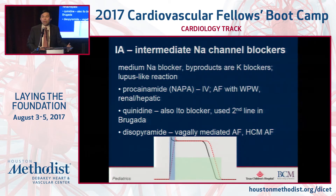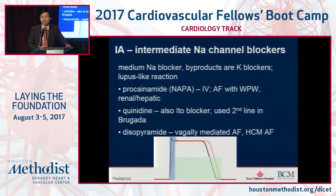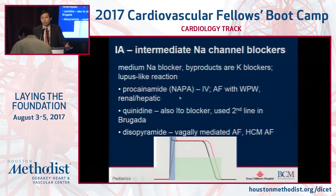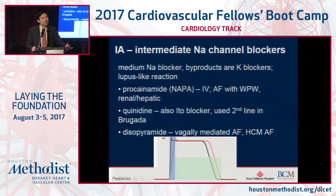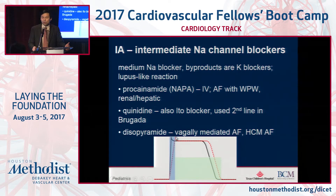The 1A agents — your medium or intermediate sodium channel blockers — the key thing to remember is that their byproducts are actually potassium channel blockers too, and on some boards they'll show up as a lupus-like reaction. Procainamide, quinidine, and disopyramide are listed here. Procainamide's buzzword is atrial fibrillation in Wolff-Parkinson-White, and it's renally and hepatically cleared as its metabolite NAPA, the N-acetylprocainamide form. Quinidine blocks the ITO channel and is a second-line agent sometimes used in Brugada. Disopyramide shows up for vagally mediated atrial fibrillation and hypertrophic cardiomyopathy AFib. These agents slow the QRS a little and prolong the QT due to potassium channel blockade.